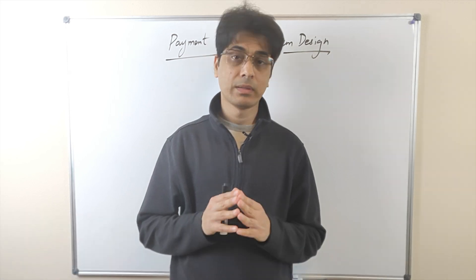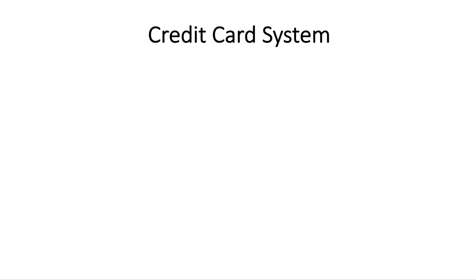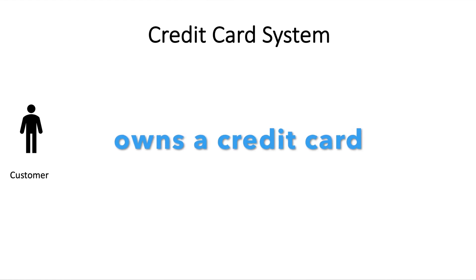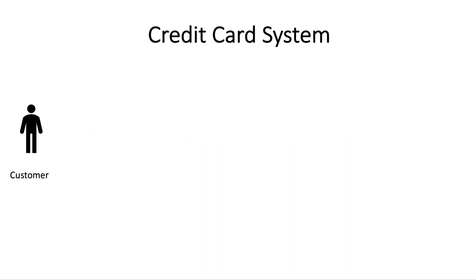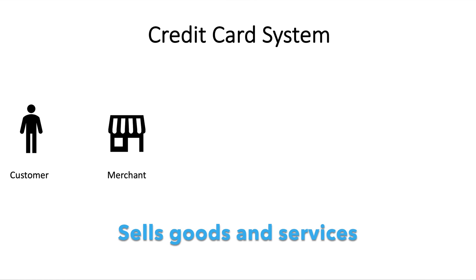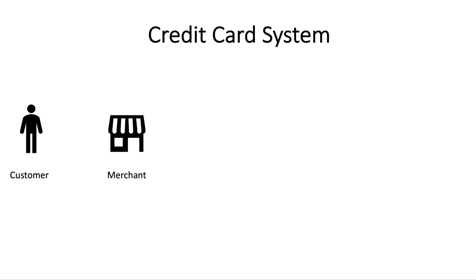A credit card system comprises the following actors. The first actor is a customer or credit card holder — a person who owns a credit card or debit card and uses it to buy goods or services from a merchant. A merchant is a business that sells goods and services to customers and accepts credit or debit cards for payment. Each merchant maintains a merchant account that enables them to accept credit card or debit card payments from customers.